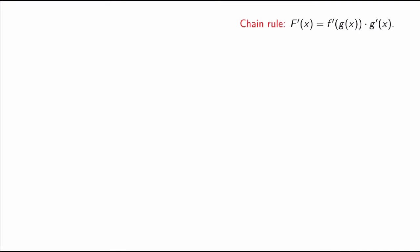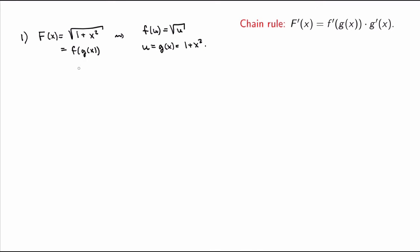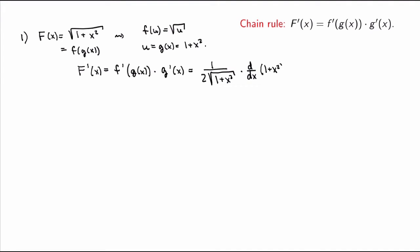I've kept the chain rule in the upper right corner so you don't forget it. First example: √(1 + x²). This is a composite function — the outer function is the square root, the inner function is 1 + x². By the chain rule, the derivative is (1 / (2√(1 + x²))) times the derivative of (1 + x²), which is 2x. Simplifying the 2's gives a final result of x / √(1 + x²).